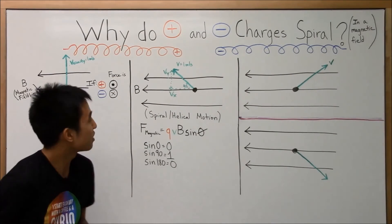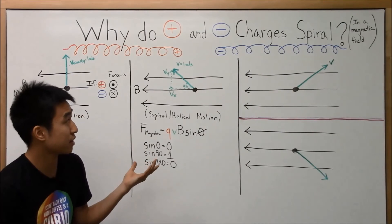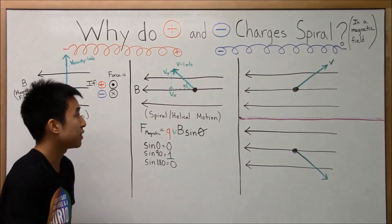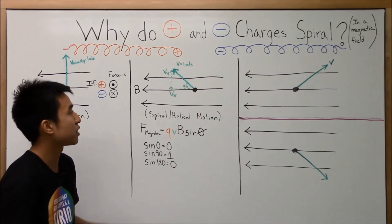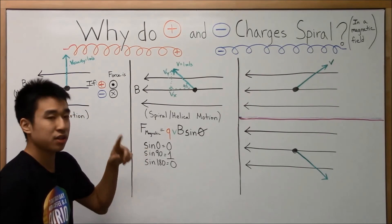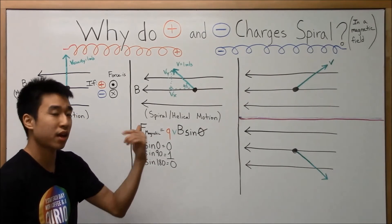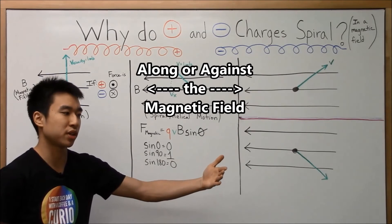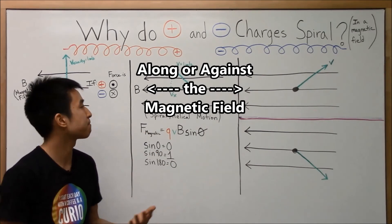So that is why positive negative charges spiral in the magnetic field. When the angle between velocity and the field is not perfectly 90 or zero, there's going to be a component that is going to be affected by the field and cause the particle to move in a circular path, and then the other component that's unaffected by the field is going to cause the particle to move in a linear motion. So all together gives you a spiraling motion. Okay?